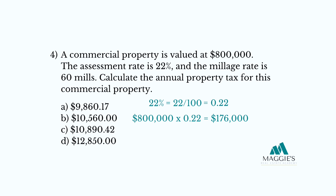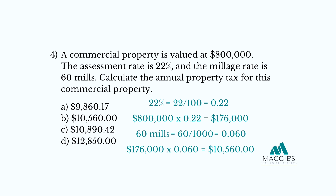Step 2: find the assessment value. $800,000 times 0.22 equals $176,000. Step 3: convert 60 mills into a decimal — 60 divided by 1,000 equals 0.060. Step 4: multiply the assessed value by the millage rate. $176,000 times 0.060 equals $10,560. So the annual property tax for this commercial property is $10,560.